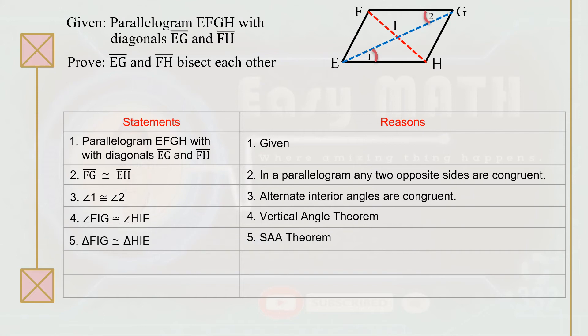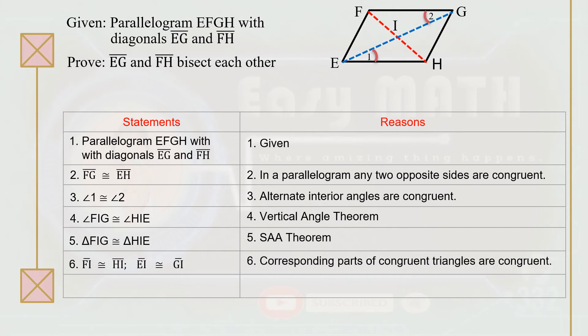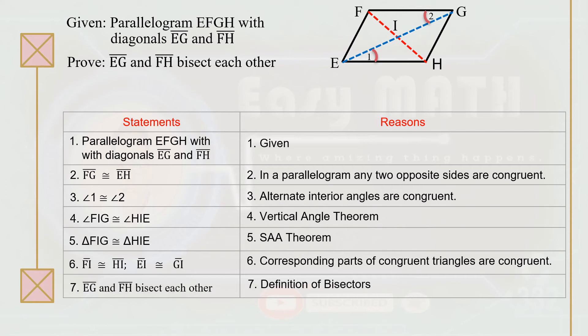Statement number five: triangle FIG is congruent to triangle HIE because of the SAA theorem. Since we have two congruent triangles, we can say that the corresponding parts of these two congruent triangles are congruent — meaning segment FI is congruent to segment HI, and segment EI is congruent to segment GI. Therefore, segment EG and segment FH bisect each other because of the definition of bisectors.